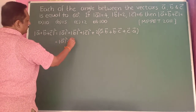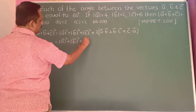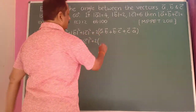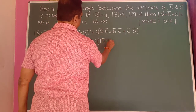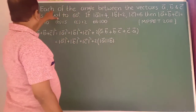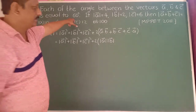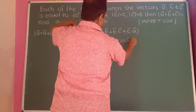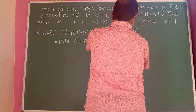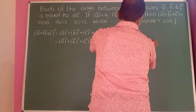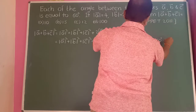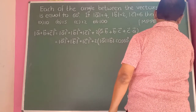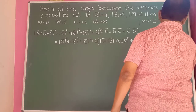This equals modulus of a-bar squared plus modulus of b-bar squared plus modulus of c-bar squared plus 2 into a-bar dot b-bar. Using the definition of dot product: a-bar dot b-bar equals modulus of a-bar into modulus of b-bar into cos(60°). Similarly b-bar dot c-bar equals modulus of b-bar into modulus of c-bar into cos(60°), and c-bar dot a-bar equals modulus of c-bar into modulus of a-bar into cos(60°).